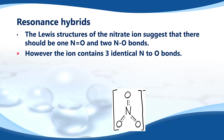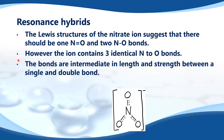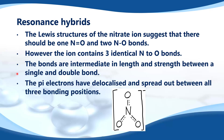However, the ion contains three identical nitrogen-to-oxygen bonds. The bonds are intermediate in length and strength between a single and double bond. The pi electrons have delocalized and spread out between all three bonding positions.